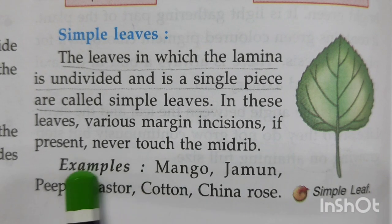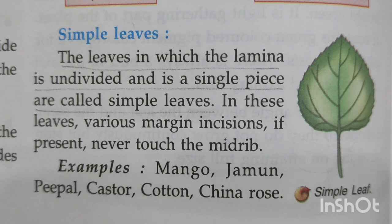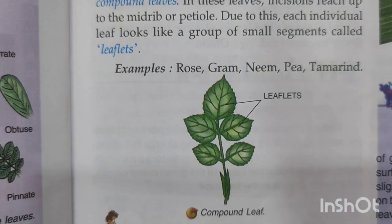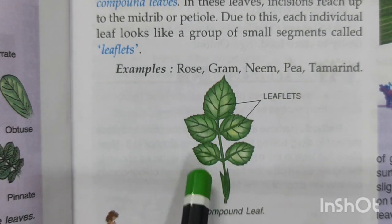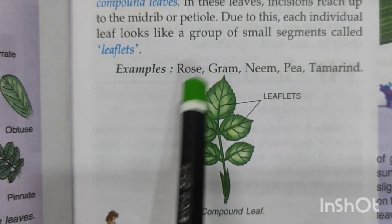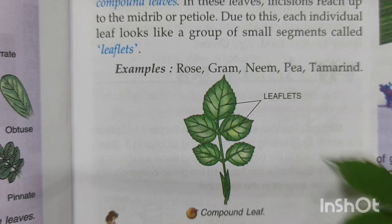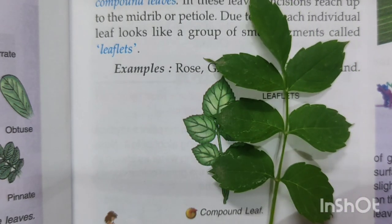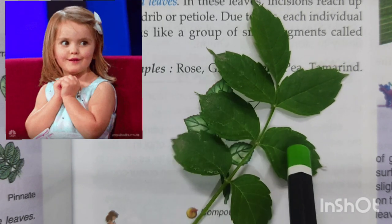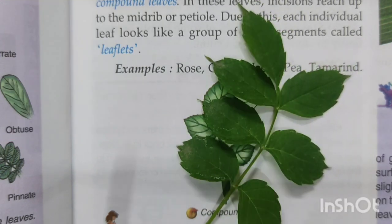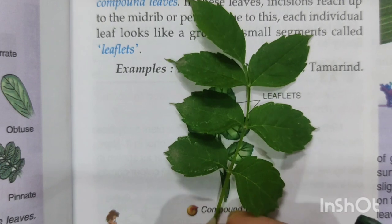Next we come to compound leaves. Have a look at the picture of a compound leaf shown over here. This kind of leaf you can find in rose, gram, neem, pea, tamarind, etc. I have also brought a real compound leaf to show you. These small individual parts are known as leaflets, and this is a real compound leaf as you can have a look at it.